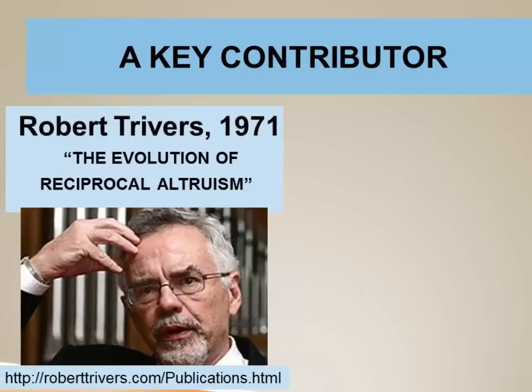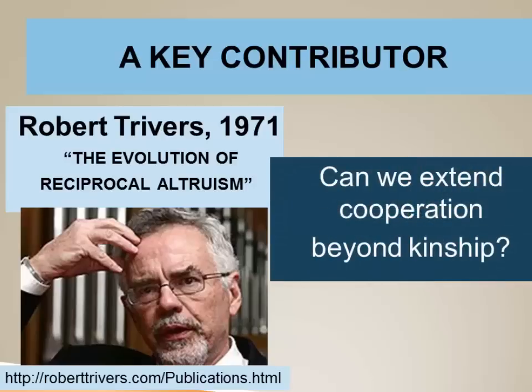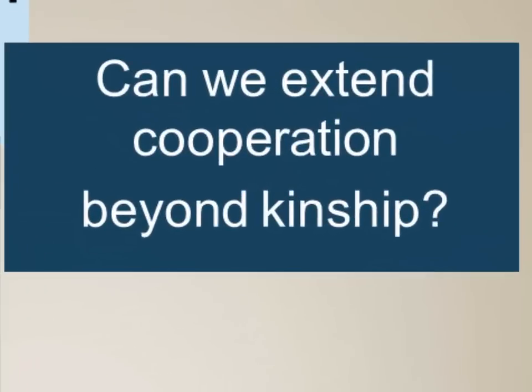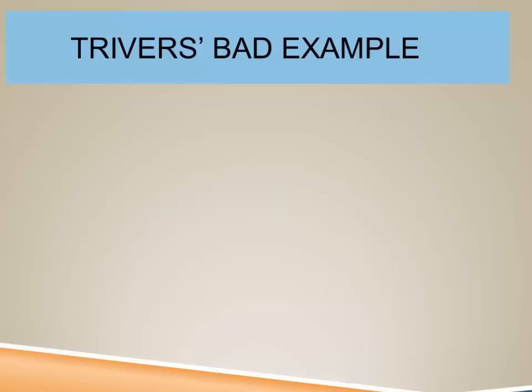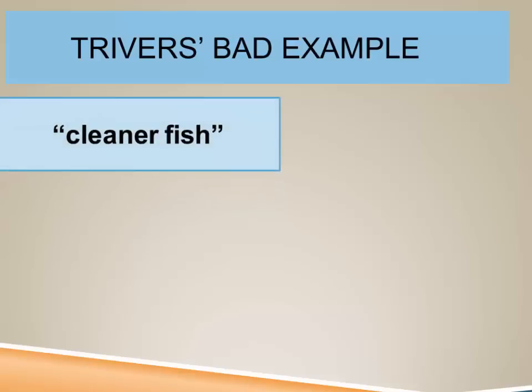A key contributor to the study of reciprocal altruism is Robert Trivers in his paper 'The Evolution of Reciprocal Altruism.' In this paper he tried to answer a very important question: can we extend cooperation beyond kinship? But it turned out he used a bad example to illustrate this — an example of what are called cleaner fish.